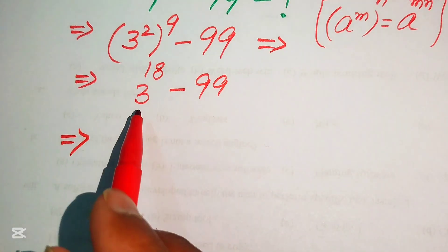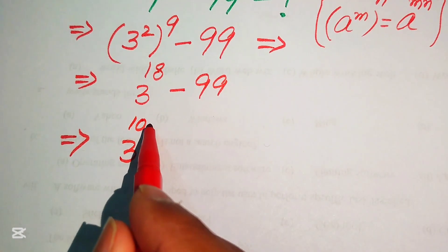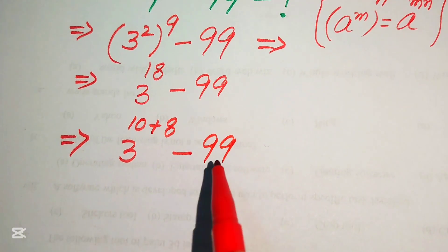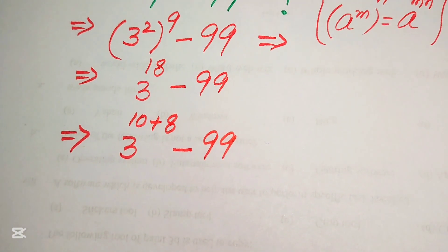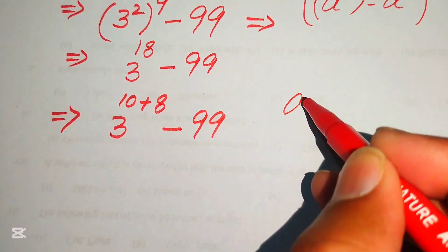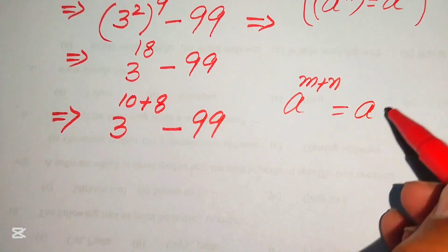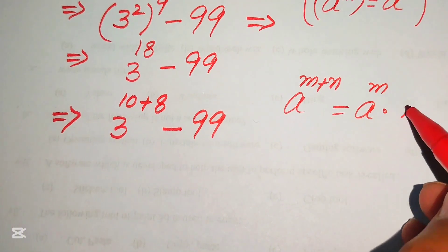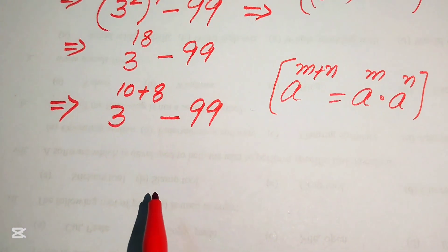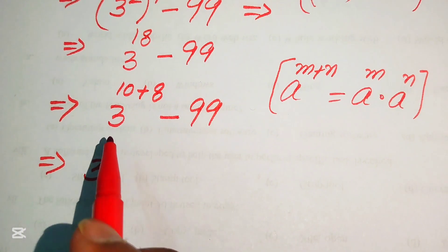In the next step we need more simplification. We write 3 to the power of 18 as 3 to the power of 10 plus 8, minus 99. Then we apply the exponent law: a to the power of m plus n equals a to the power of m multiplied by a to the power of n.